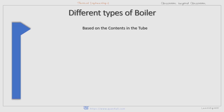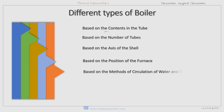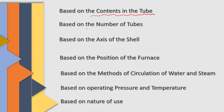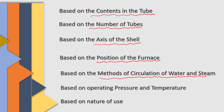Boilers are classified based on many factors — on the basis of contents of the tube, what is inside the tube. They can also be classified on the basis of number of tubes, the axis of the shell, the position of the furnace, methods of circulation of water and steam, operating pressure and temperature, and also on the basis of nature of use.